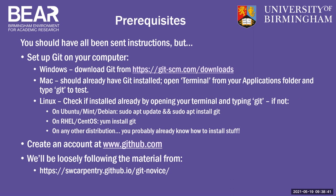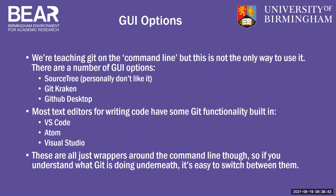Here are some GUI options if you want to try those later: SourceTree, GitKraken, and GitHub Desktop are popular. If you use a text editor for writing your code, many have Git functionality built in — VS Code, for example. Personally I use VS Code a lot and find it really helpful. But they're all just wrappers over what we're going to learn today on the command line. Once you know the concepts, it's very easy to switch.